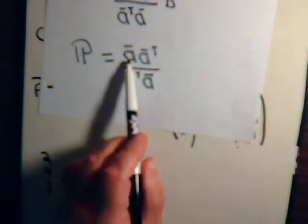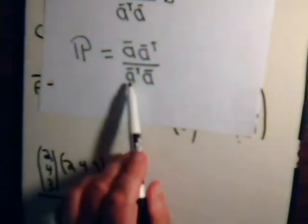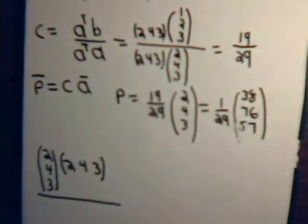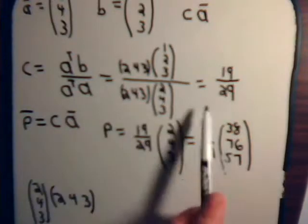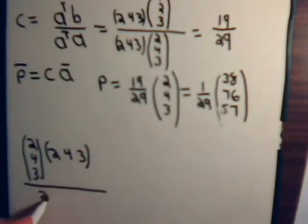(2, 4, 3), that's vector A, times A transpose. That's (2, 4, 3), divided by A transpose A. And again, that's what? Well, that's just the magnitude of vector A squared, and in fact, we just did that right here. That is 29, so if we're down here, we can just put in 29.